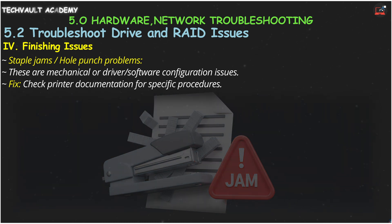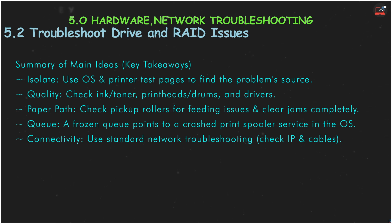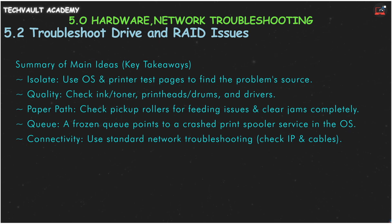So for your A-Plus exam, here are the main ideas. Start by isolating the problem with test pages. For print quality issues like lines, fading, or garbled text, investigate the ink, toner, print heads, drum, or drivers. For paper handling issues like jams and misfeeds, check the paper path and the pickup rollers. A frozen print queue is almost always a crashed spooler service in the OS. And for connectivity issues, use your network troubleshooting basics to check the printer's IP and physical connection.